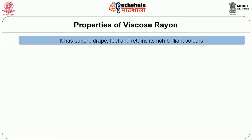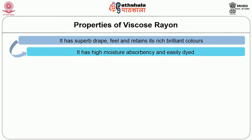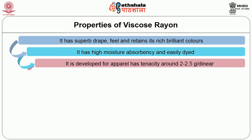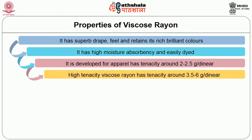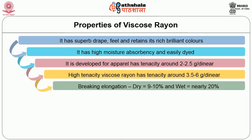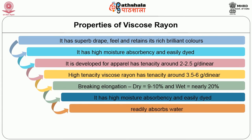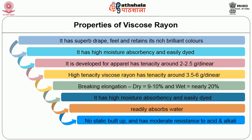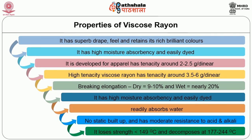Viscose rayon has superb drape, feel and retains its rich, brilliant colors. It has high moisture absorbency and can be easily dyed. Viscose rayon developed for apparel has tenacity around 2 to 2.5 grams per denier. High tenacity viscose rayon has tenacity around 3.5 to 6 grams per denier. Breaking elongation in dry condition is around 9 to 10 percent and in wet it is nearly 20 percent. Wet strength of viscose rayon is poor. Viscose rayon readily absorbs moisture and water. There is no static build-up and it has moderate resistance to acids and alkalis. Viscose is flammable; it loses strength above 149 degrees Celsius and decomposes at 177 to 244 degrees Celsius.